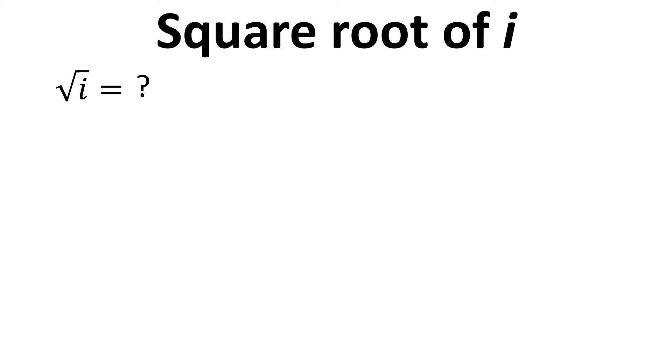To start us off we're going to set the square root of i equal to a plus bi which is the standard form of a complex number. We're then going to use algebra to try and get to a solution.